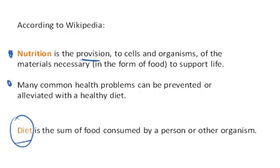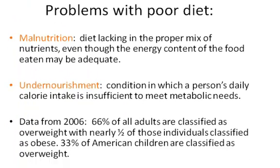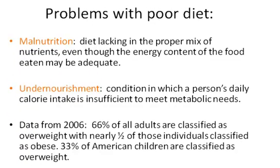Since diet is what's provided to us, nutrition is the materials necessary to support life. There are problems associated with a poor diet. Two key terms are malnutrition and undernourishment. Malnutrition is when the diet is lacking in the proper mix of nutrients, even though the energy content of the food eaten may be adequate.